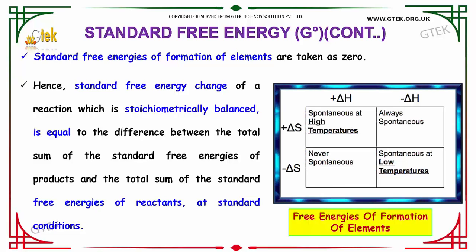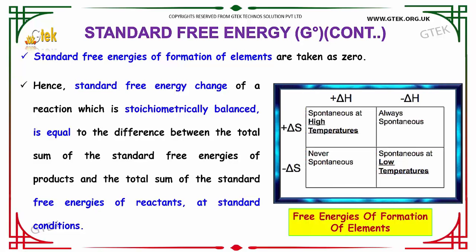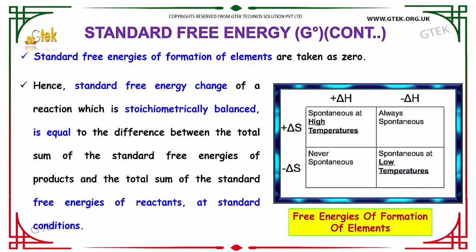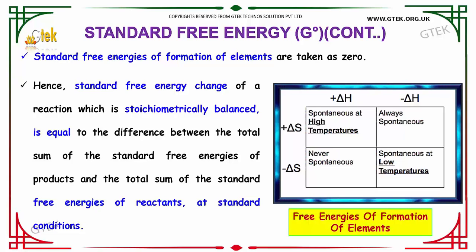When delta S and delta H are both considered: the reaction is spontaneous at very high temperature when delta H is positive and delta S is positive; it is always spontaneous when delta H is negative and delta S is positive; never spontaneous when delta H is positive and delta S is negative; and spontaneous at low temperature when delta H is negative and delta S is negative.